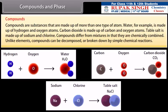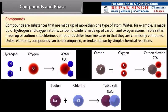Compounds are substances that are made up of more than one type of atom. Water, for example, is made up of hydrogen and oxygen atoms. Carbon dioxide is made up of carbon and oxygen atoms. Table salt is made up of sodium and chlorine. Compounds differ from mixtures in that they are chemically combined. Unlike elements, compounds can be decomposed or broken down by simple chemical reactions.